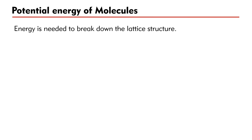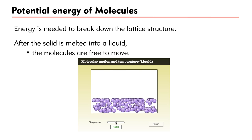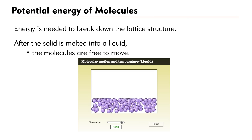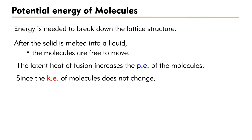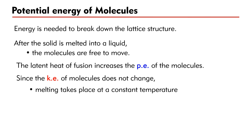Energy is needed to break down the lattice structure, just like energy is needed to break down a house. After the solid is melted into a liquid, the molecules are free to move. Note that the molecules in a liquid are still closely packed. The latent heat of fusion increases the potential energy of the molecules. Since the kinetic energy of the molecules does not change, melting takes place at a constant temperature which we call the melting point.